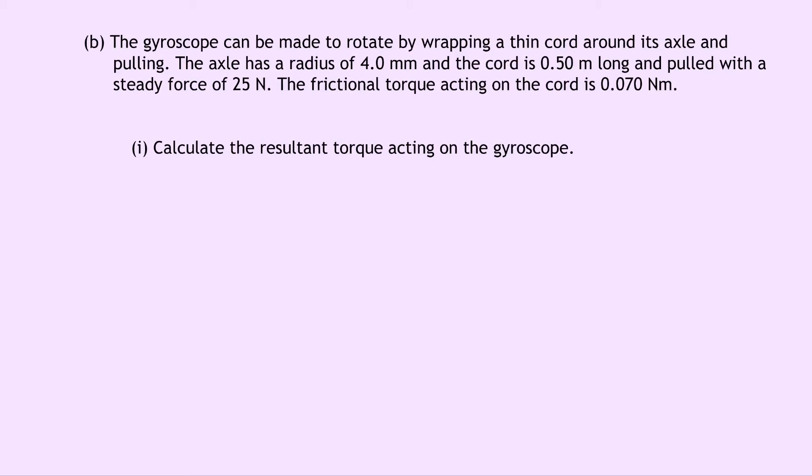Part B says the gyroscope can be made to rotate by wrapping a thin cord around its axle and pulling. The axle has a radius of 4.0 mm and the cord is 0.50 m long and pulled with a steady force of 25 N. The frictional torque acting on the cord is 0.070 Nm.